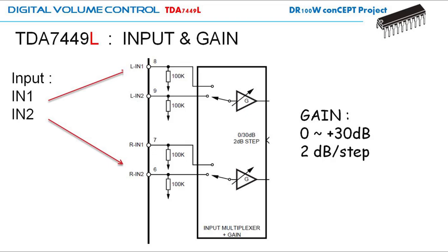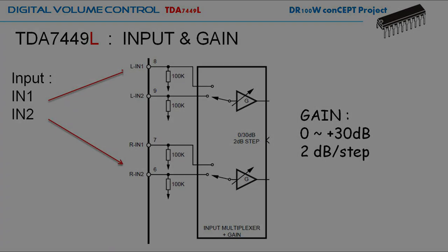Let's see the input multiplexer or input selection and the gain block. There are two inputs — input one and input two — and whichever input is selected, you can boost that from zero to plus 30 dB for both the left and the right channel. We will see later how to do that using the I2C protocol.